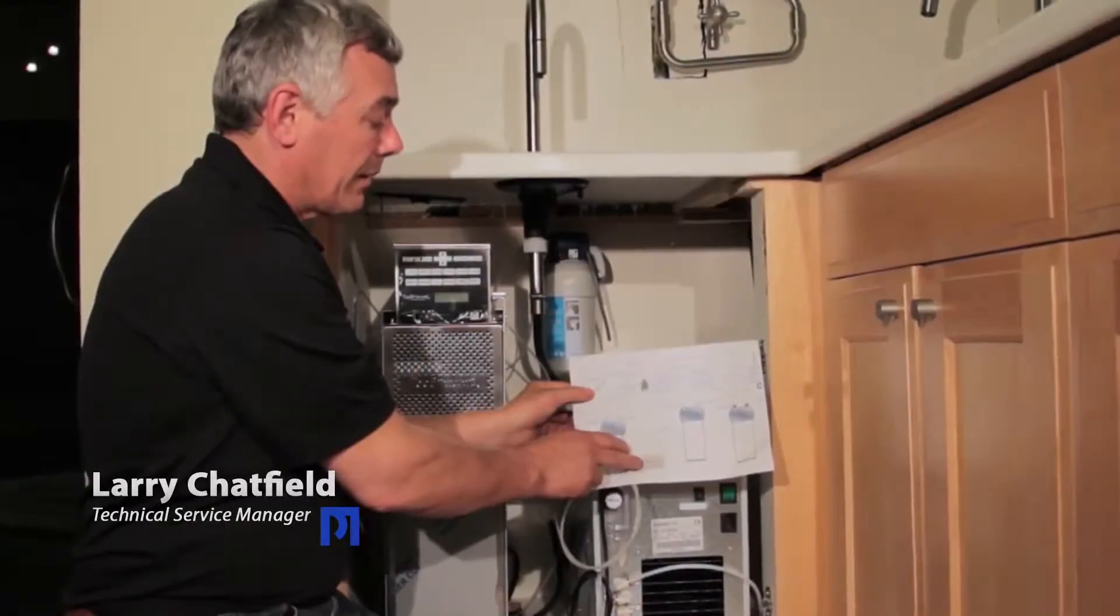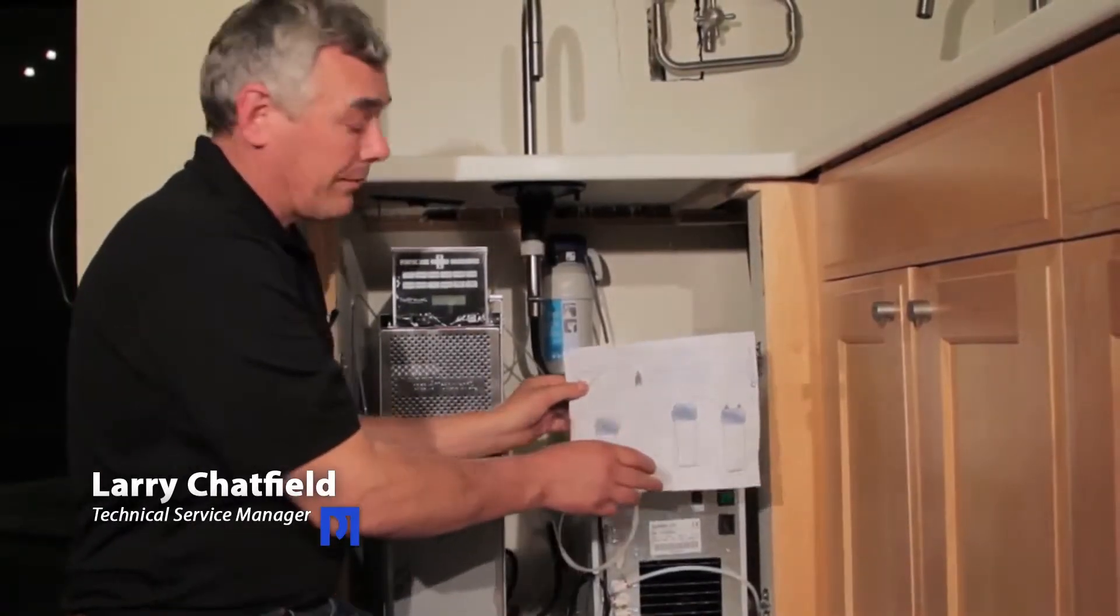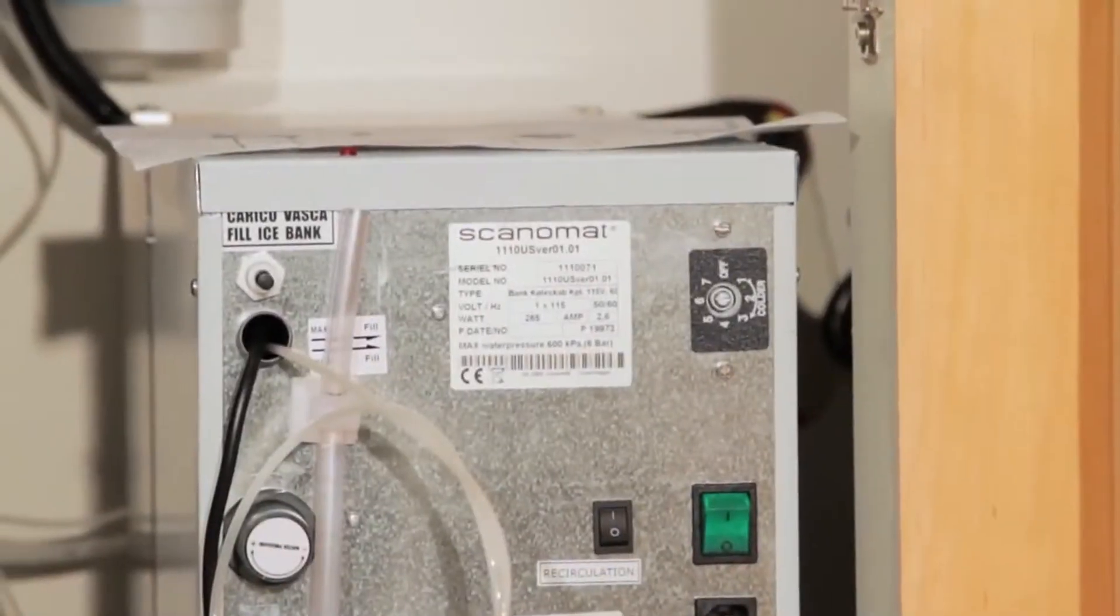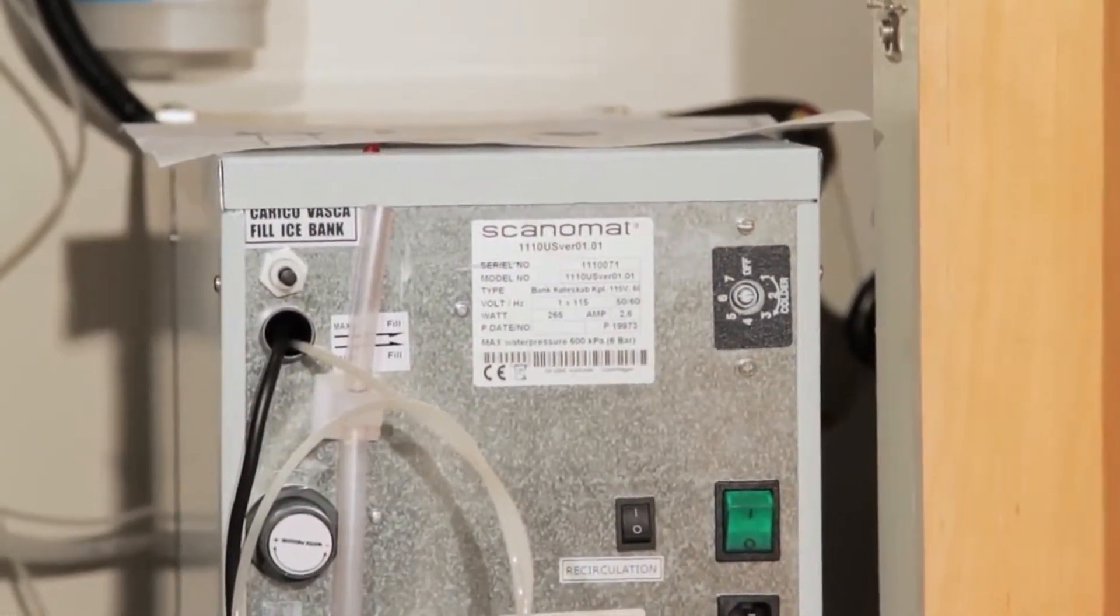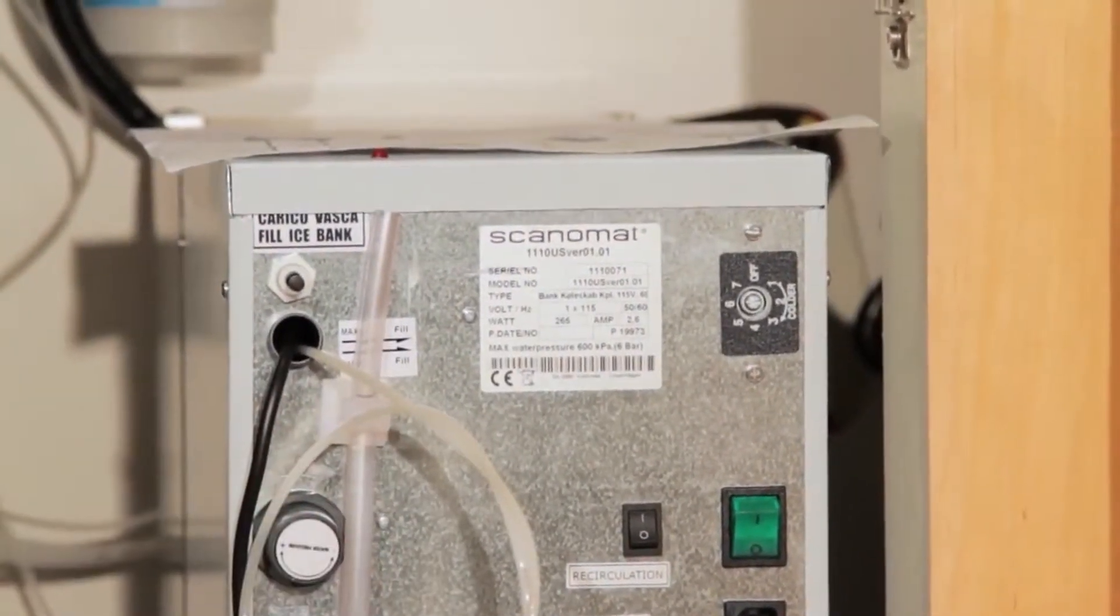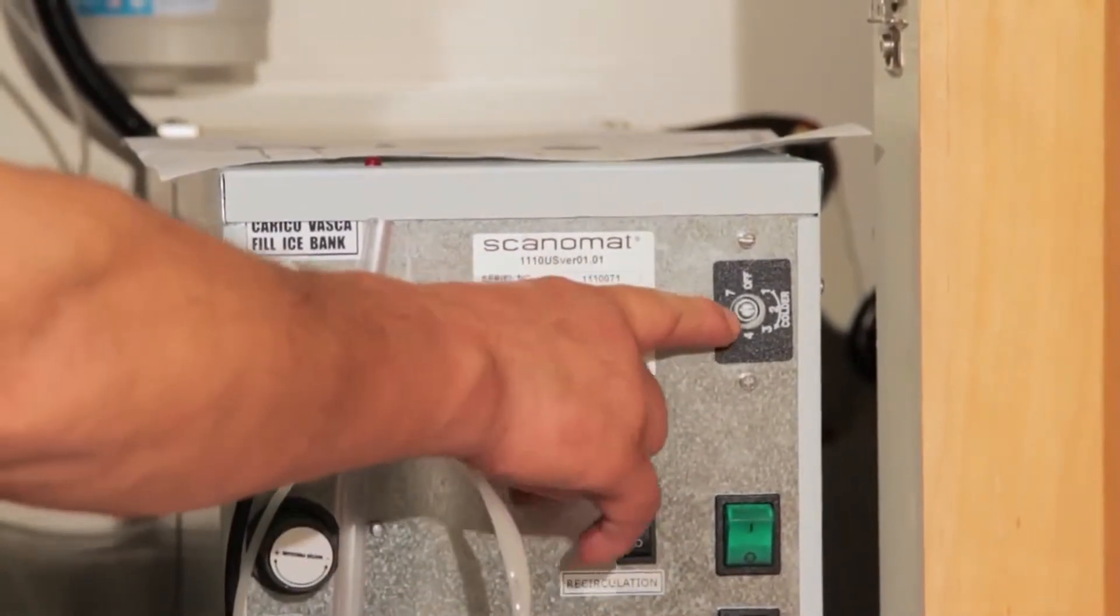Now let's take a look at the ice bank and take a closer look at the connections on the back of the ice bank. You'll find a host of different connections and fittings as well as a thermostat.